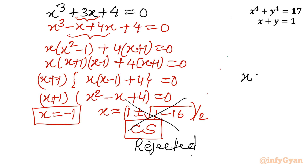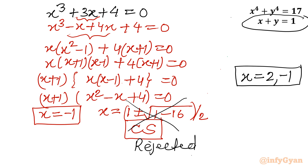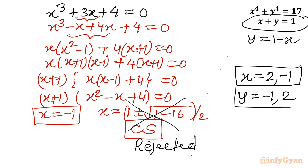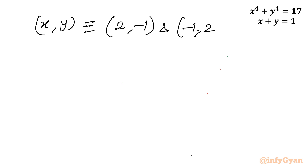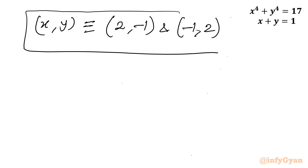With x = 2 and x = −1, and using y = 1 − x, we get y = −1 and y = 2 respectively. So the final answers are (x, y) = (2, −1) and (x, y) = (−1, 2), confirming that the sum x + y = 1 is always satisfied.